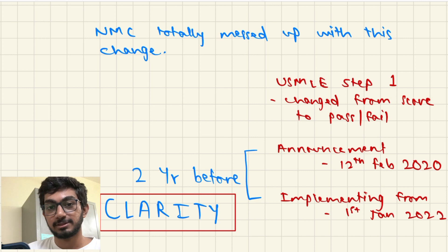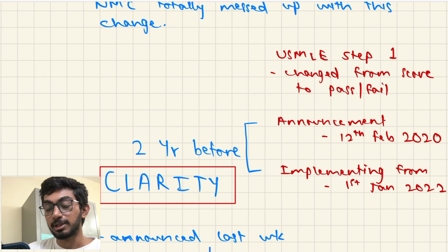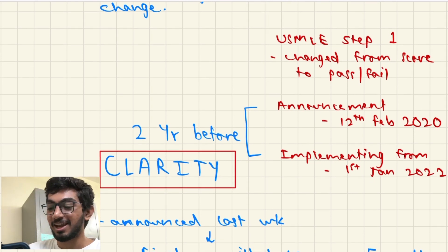This could have been something so much better than what it has become right now. Everyone is literally abusing NMC and rightfully so because they've totally messed it up, like the timeline and everything. For example, when USMLE Step 1 was changing from a scoring system to a pass-fail system, they did their announcement two years before. They announced it on 12th of February 2020 that they were going to change it from the scoring system to pass-fail, and in the announcement they said they're going to be implementing it from 1st of January 2022. So essentially two years before they told us that it's going to be pass-fail so you can prepare accordingly. This is what I mean by clarity - having clarity in your announcements is very much important for students to not feel the anxiety that they're feeling right now.